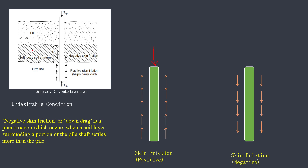Look at this image. You have a pile on which load Q_UP is applied, causing the pile to go downward, and positive skin friction is generated in the opposite direction to the sinking. But in some cases, there may be a soft or loose sand layer, and on top of this layer some filling work has been done — fill that was not there when the pile was installed. This fill is a new load.